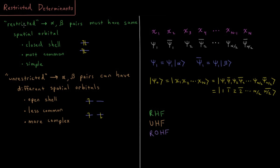In what we would call a restricted determinant, the alpha-beta pairs — the electrons that are paired together near that same energy — must have the same spatial orbital. So basically, if we think of a 1s atomic orbital for a helium atom, there's a spin-up and a spin-down electron, and in restricted Hartree-Fock, the spatial function for those 1s electrons must be the same. This would be the same for 1s, 2s, 2px, 2py, 2pz as you go up the line — for every pair of electrons where their spins are matched, they have to be in the same exact spatial orbital.